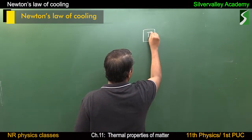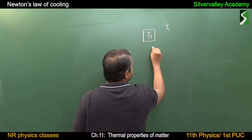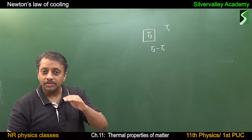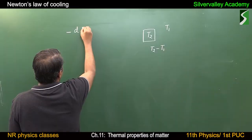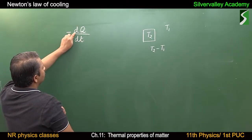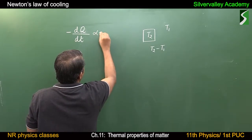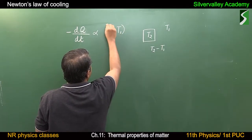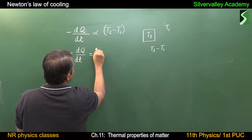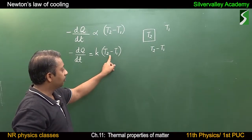This is a body at temperature T2, and T1 is the temperature of the surroundings. The temperature difference is T2 minus T1. The law says that the time rate of loss of heat, so we write minus dQ by dT, where Q is heat energy. Minus means decrease. This is proportional to T2 minus T1, so minus dQ by dT equals some constant times T2 minus T1. This is the temperature difference between the body and the surroundings.